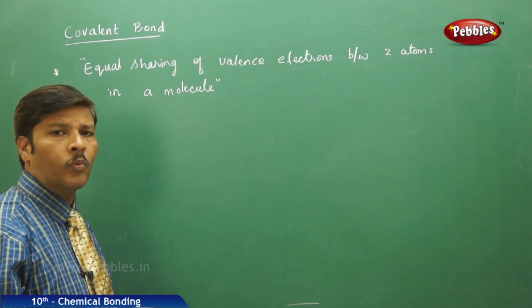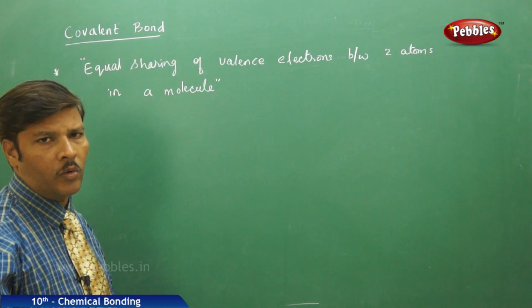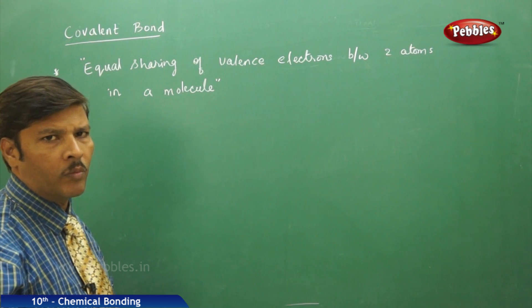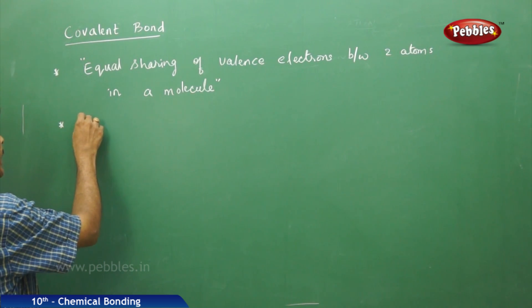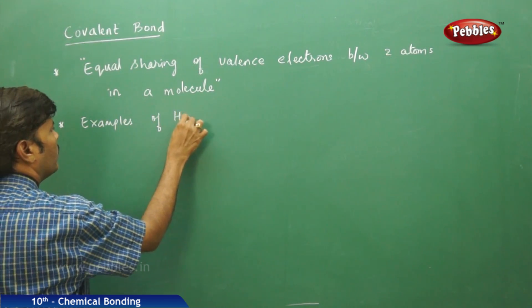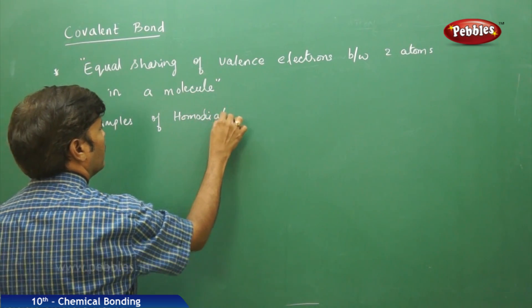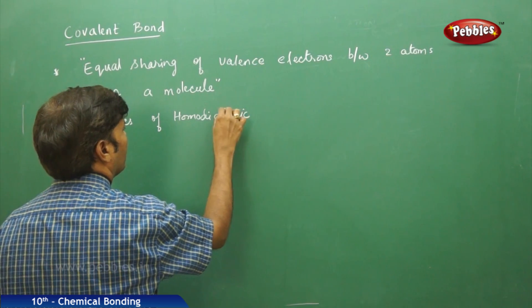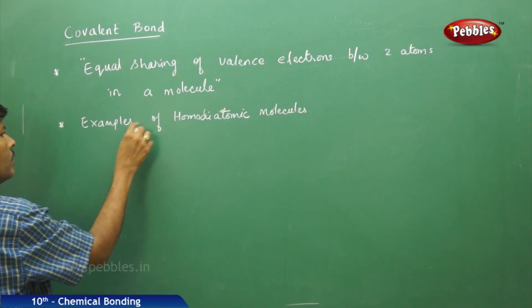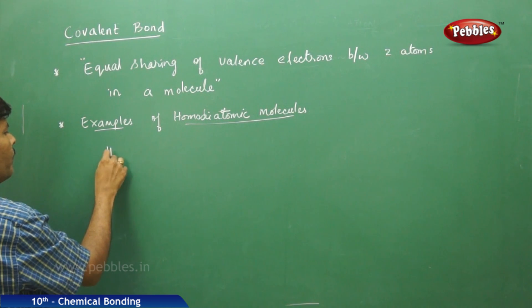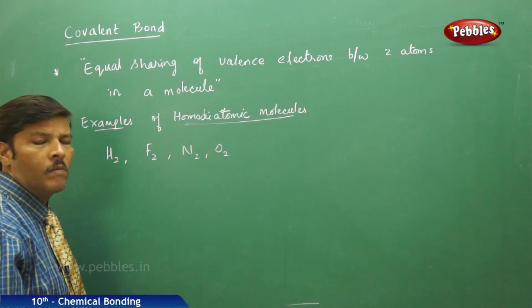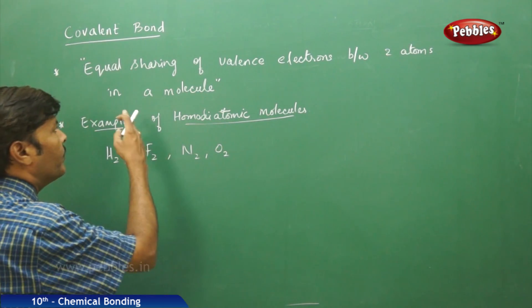The covalent bond formation is more prominent and significant in the case of homo diatomic molecules. However, the covalent bond is also expected even in hetero diatomic molecules. Examples of homo diatomic molecules include H₂, F₂, N₂, and O₂.